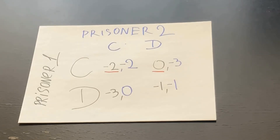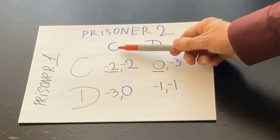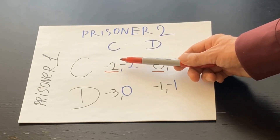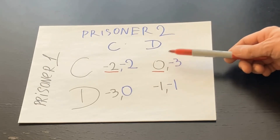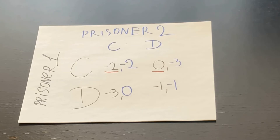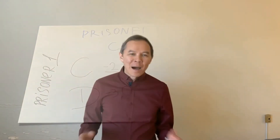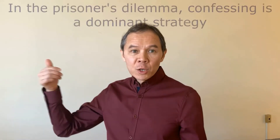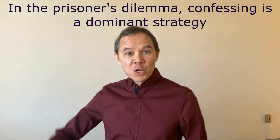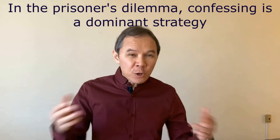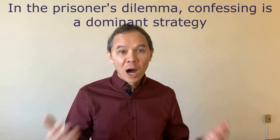Notice that the first prisoner should confess no matter what. If his friend confesses, the first prisoner should confess. If the second prisoner denies, the first prisoner should still confess. In game theory we call this a dominant strategy. A dominant strategy is a strategy you follow no matter what other people do. In the prisoner's dilemma, confessing is the dominant strategy — your friend confesses, you confess; your friend denies, you still confess.